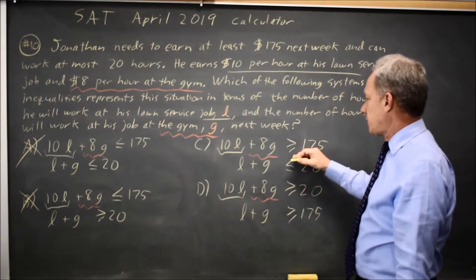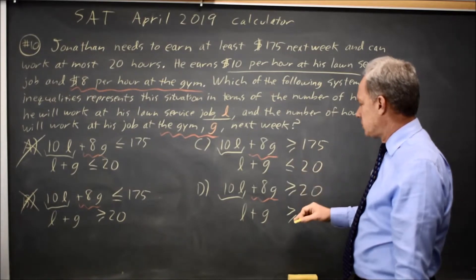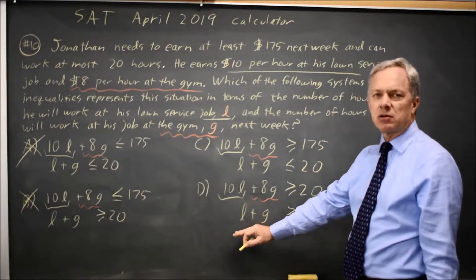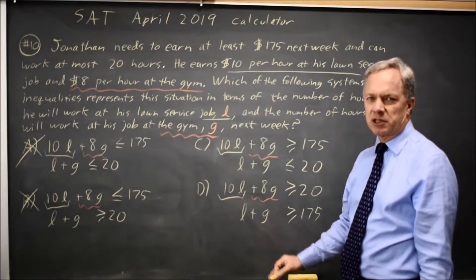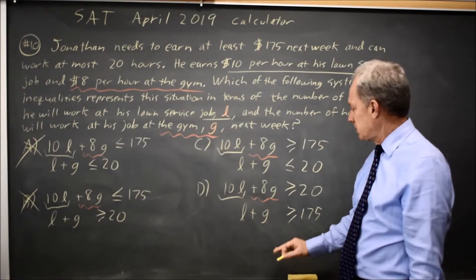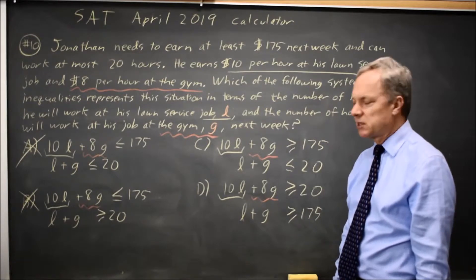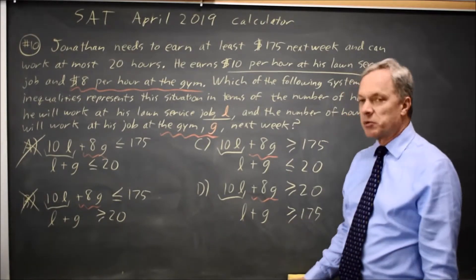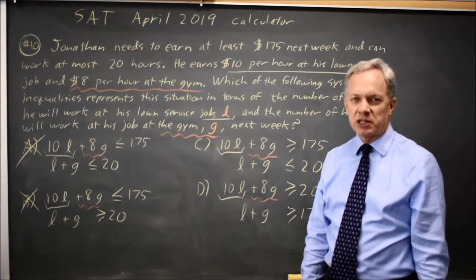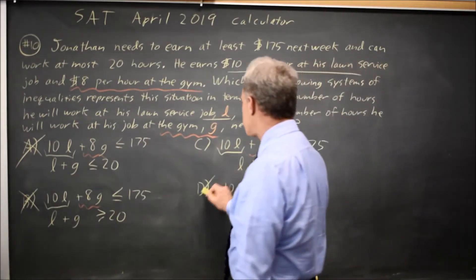Choice C: 10L plus 8G greater than or equal to. Choice D: L plus G, that's his hours working the lawn service plus his hours working the gym. Total hours worked, they're saying, is at least $175, which is supposed to be total income. Besides which, working $175 hours in a week would be quite a challenge. So choice D is wrong.